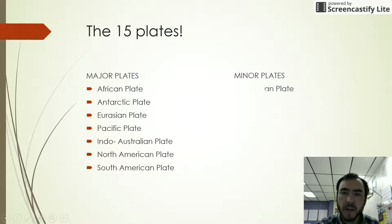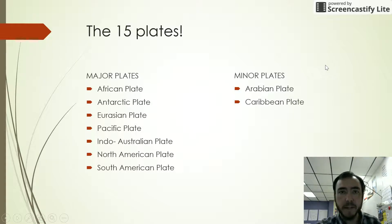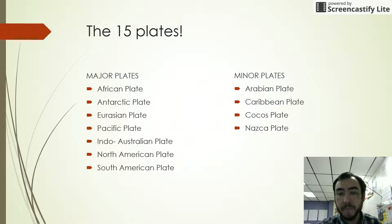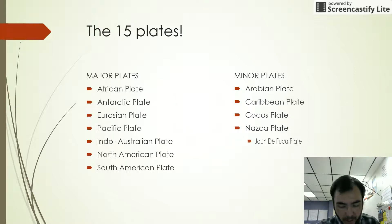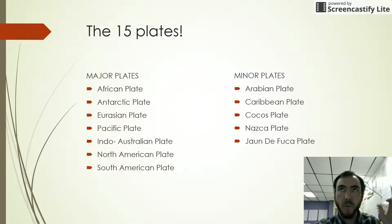We also have minor plates. For example, the Arabian plate — that's in the Middle East, places like Arabia, Iran, and Iraq. We have the Caribbean plate, where our Caribbean islands are. We have the Cocos plate, which is just south of Mexico and just west of northern South America. We have the Nazca plate, which is located just south of the Cocos plate. And there's the Juan de Fuca plate, a very small plate located just off the coast of the northwest United States.